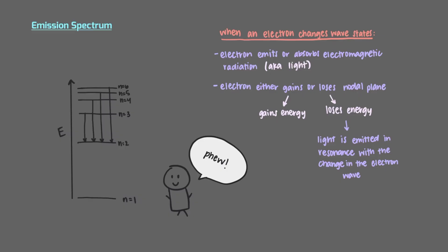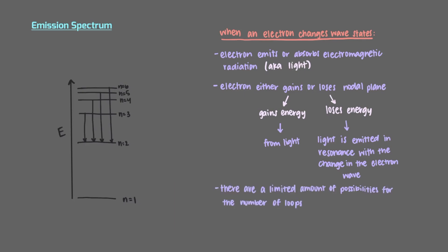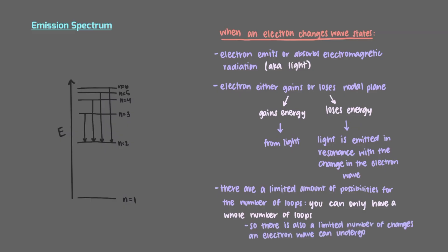Similarly, in order for an electron to gain a loop, it must gain energy from light. So it's all about the principal quantum number n — the number of loops. There are limited possibilities for the number of loops: you can have one, two, or three loops, but not 2.5 or 7.11 loops. You can only have a whole number of loops, which limits the number of changes the electron wave can undergo, meaning there are only very few quantized emission frequencies we will see when an atom emits light.